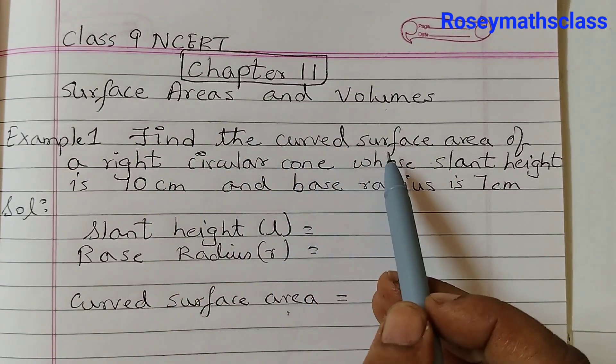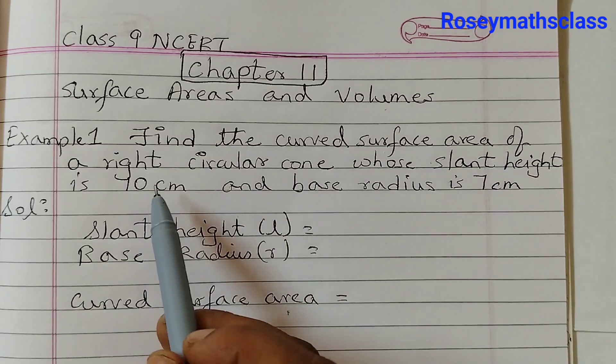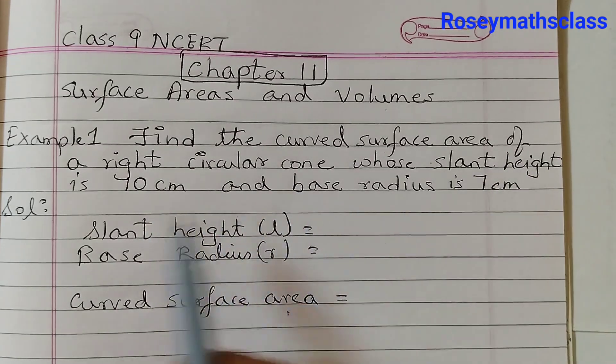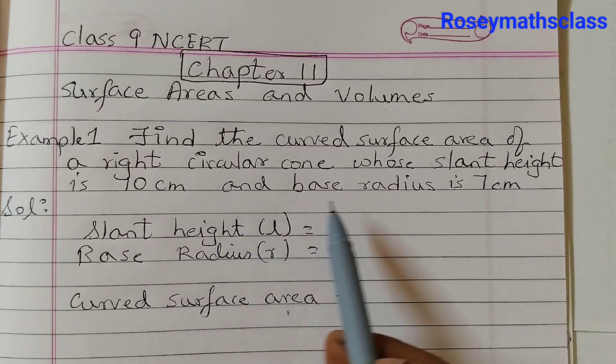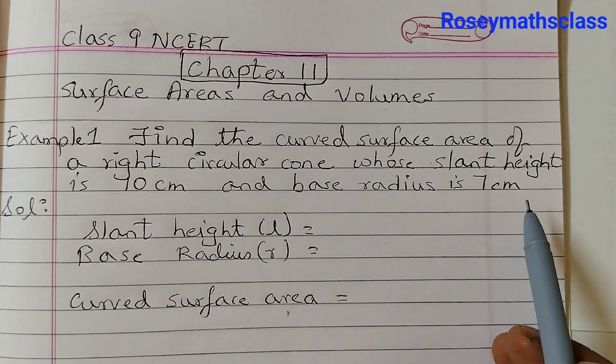Find the curved surface area of a right circular cone whose slant height is 10 cm and base radius is 7 cm.